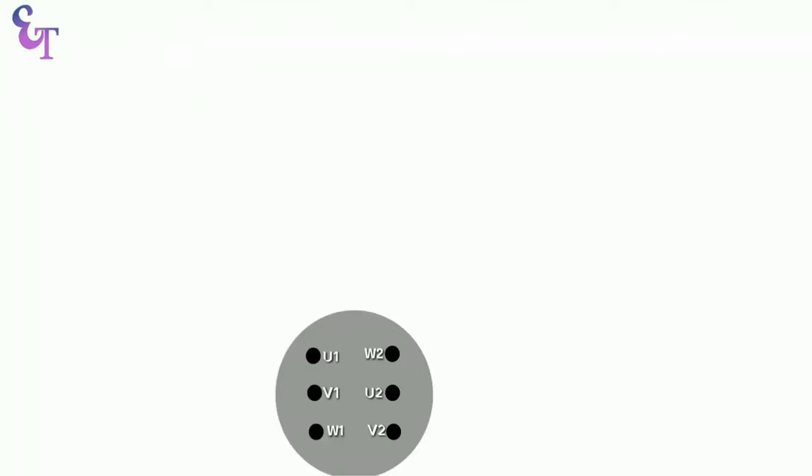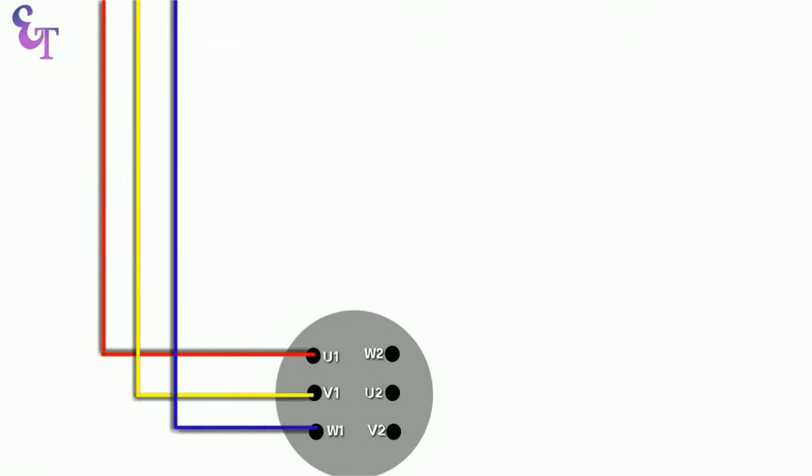To run any motor we connect three-phase power supply with incoming terminals. Now if we want to control this motor then in series to power supply we connect a contactor so that it can control the power supply. The contactor through which we control the power supply to motor we call this as main contactor.